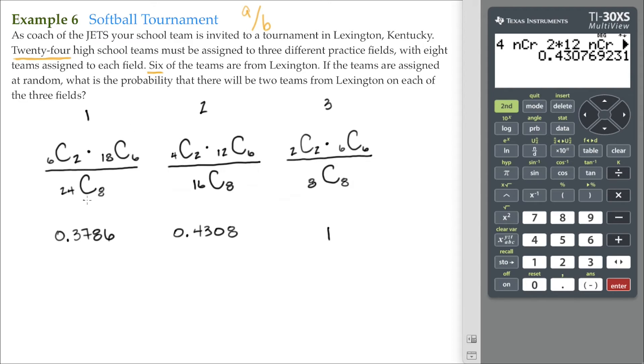So, if the probability of the first field assignment is this, the probability of the second field assignment being this, and the probability of the third field assignment being this, what is the probability altogether?